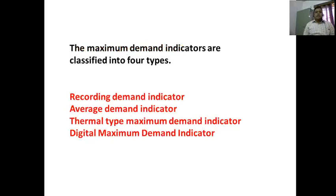How many types are there? The Maximum Demand Indicators are classified into 4 types: one is Recording Demand Indicator, second is Average Demand Indicator, third is Thermal Type Maximum Demand Indicator, and the fourth one is Digital Maximum Demand Indicator.